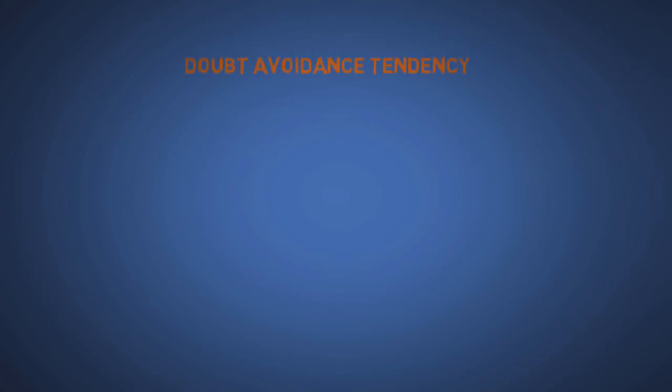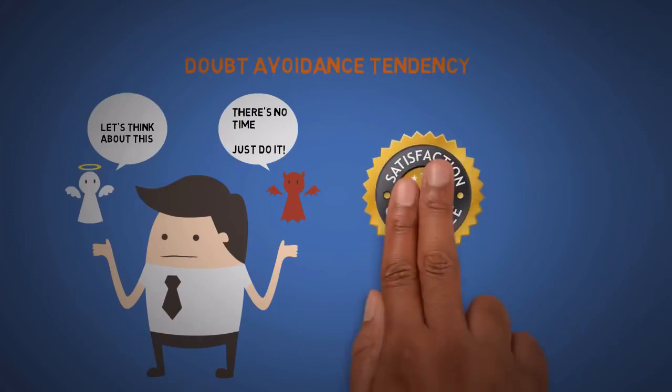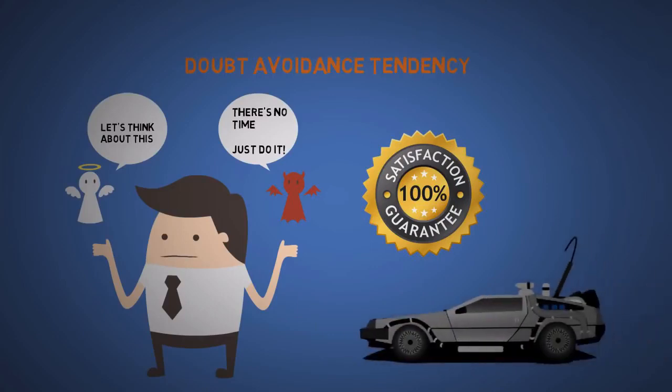The fourth is doubt avoidance tendency. If we are unsure about a decision, we try to quickly remove any doubt by making an ill-informed, quick decision. So if you want to become more persuasive, then simply increase your certainty. Like if you don't enjoy the rest of this video, then I promise you a free time machine so I can refund your time. No questions asked.